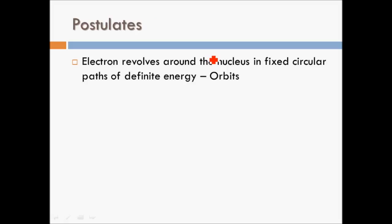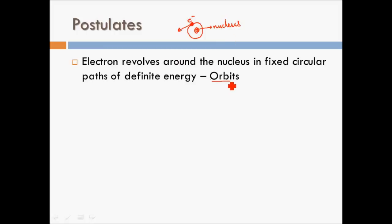Neil Bohr said that the electron revolves around the nucleus in fixed circular paths of definite energy. This is going to be our nucleus, and around it are circular paths — called orbits — where the electron revolves. There can be multiple concentric orbits around the nucleus.